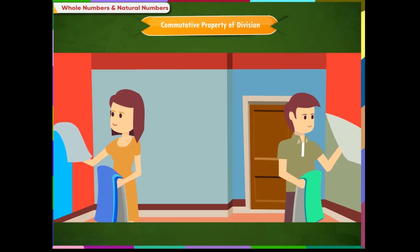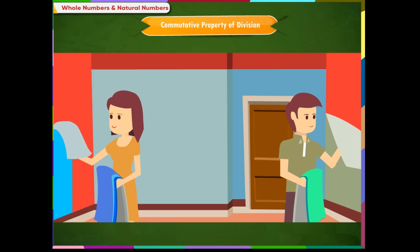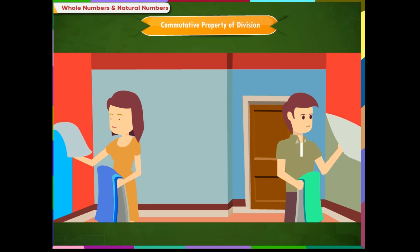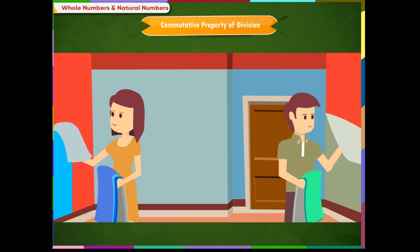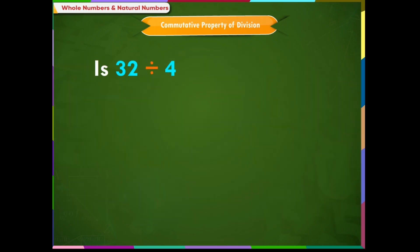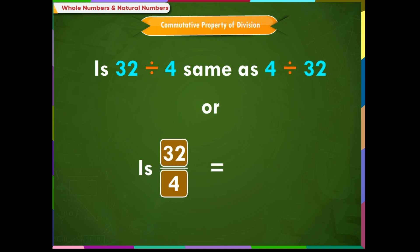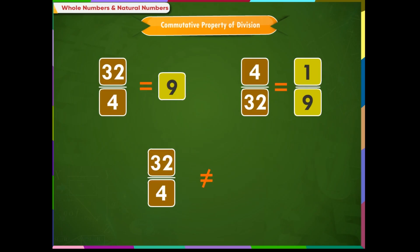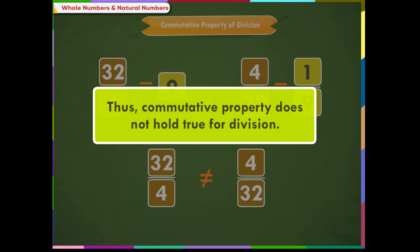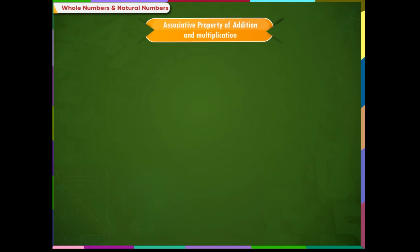Commutative property of division: Prabha and Manoj want to put 32 wallpapers equally in 4 walls. Will the result of the division remain the same if they change the order of the numbers? As we see, the results differ as the order of the numbers are changed. Therefore, we say that commutative property does not hold true for division.